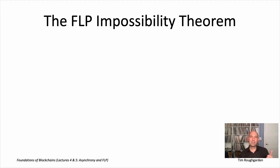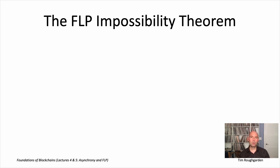So we now understand the asynchronous model, the definition of a protocol in the asynchronous model, and the definition of the Byzantine agreement problem. We're now in a position to finally state what is perhaps the most famous impossibility result in all of distributed computing: FLP impossibility.